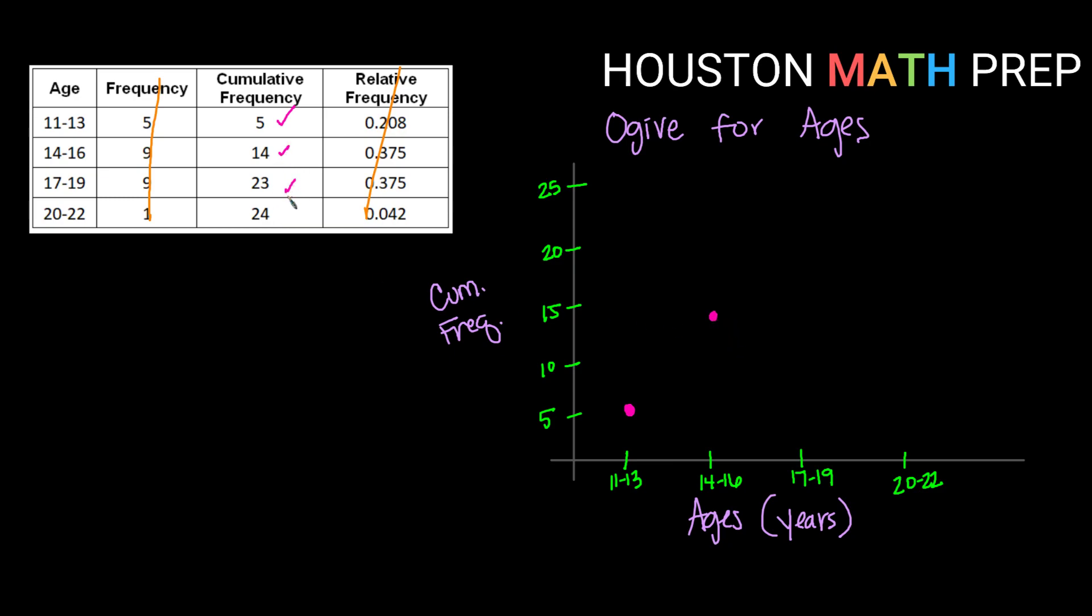My next cumulative frequency is 23. So above my 17 to 19, 23 would be about right there. And for my 20 to 22 class, the cumulative frequency is 24, so just a little bit above that 23.